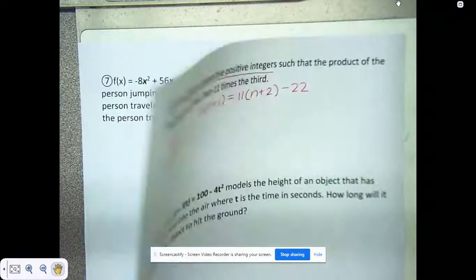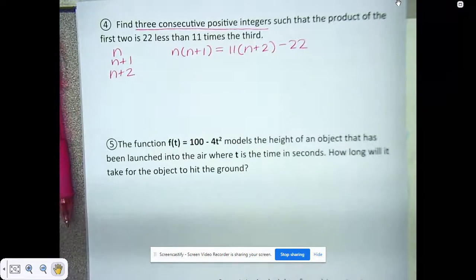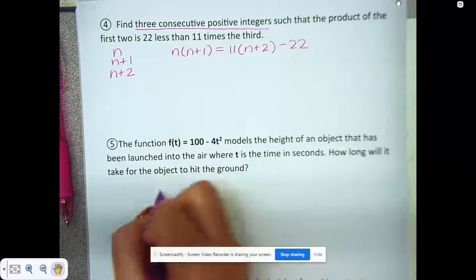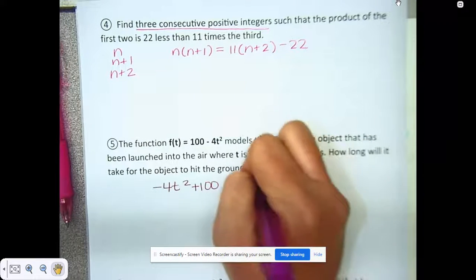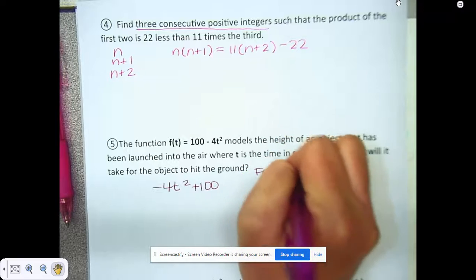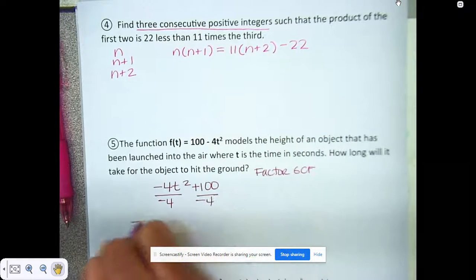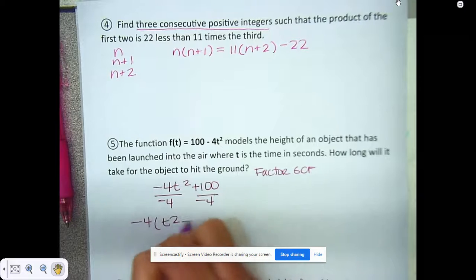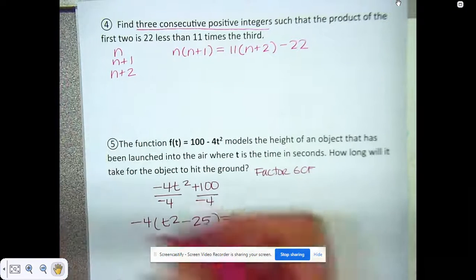Five, six, and seven are all factoring problems as well. How long until it hits the ground? Remember when we do this, we start by changing this in order, then you're going to factor your GCF, which in this situation is going to be negative 4. That leaves me with t squared minus 25. The ground is 0, so we set it equal to 0.